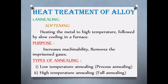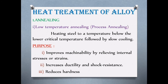Annealing is a softening process. The steel is heated to a high temperature and then cooled slowly. The purpose of annealing is to improve ductility and shock resistance. There are two types: low-temperature annealing and high-temperature annealing, also called full annealing. Low-temperature annealing heats steel below the critical temperature.